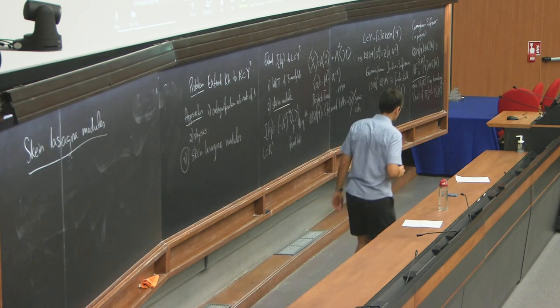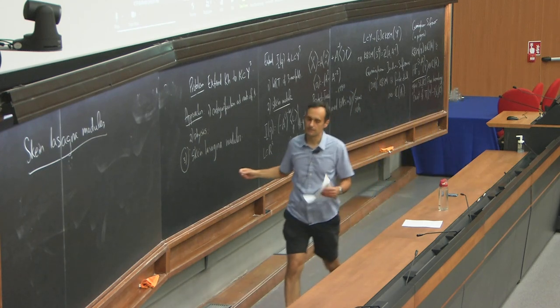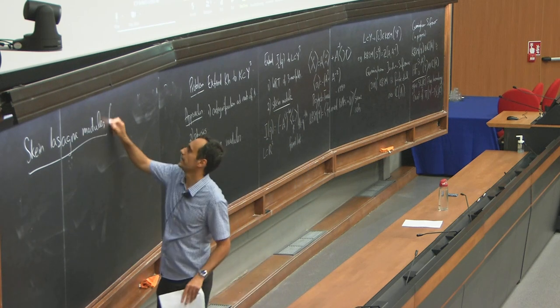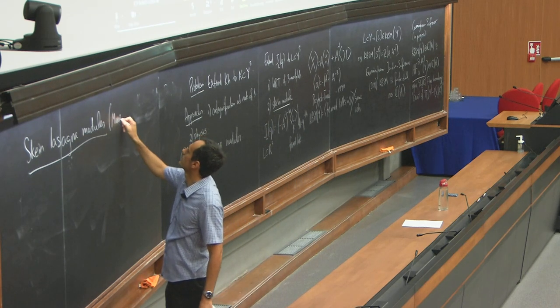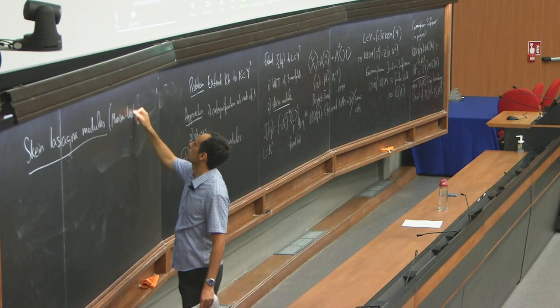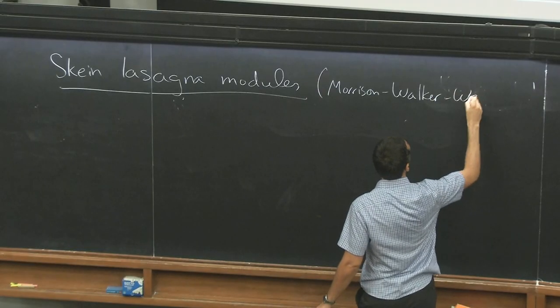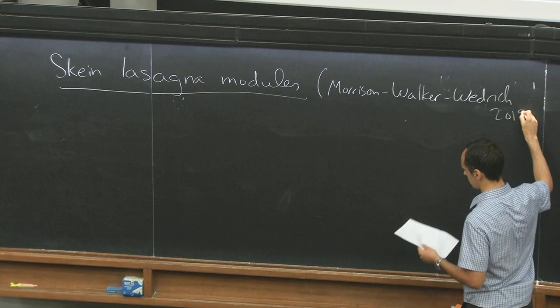Okay, so for Khovanov homology, you try to do the same thing, but you define something formal, where you divide by the local relations in Khovanov homology. So, what does this mean? So, this is the skein-lasagna modules. This was defined by Morrison, Walker, and Wedrich, 2019.